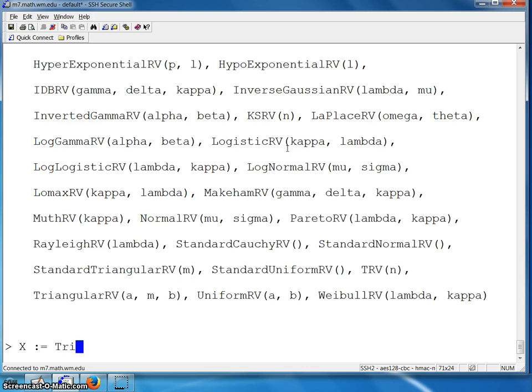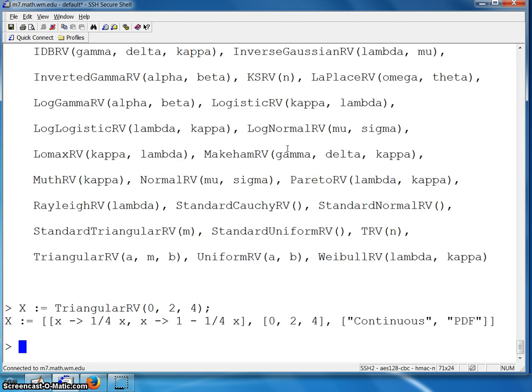And then what you want to do is define a random variable X to be a triangular random variable with parameters 0, 2, and 4. And you'll notice that in this particular case, the probability density function breaks at 0, 2, and 4. We have a continuous random variable, and the probability density function right here is 1 fourth X between 0 and 2, and then it's 1 minus 1 fourth X between 2 and 4. So that defines the triangular random variable.